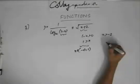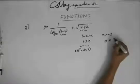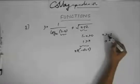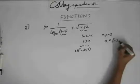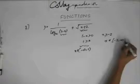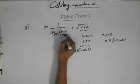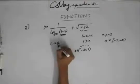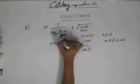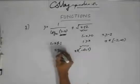Also, you know that 1 minus x can't be equal to 1, because if this becomes 1, then log of 1 is obviously 0, and I can't have a 0 in the denominator. So this can't be equal to 1, which means x can't be equal to 0.